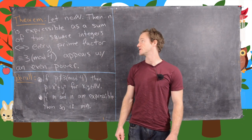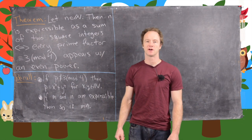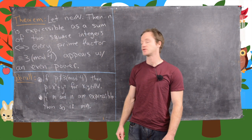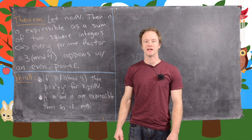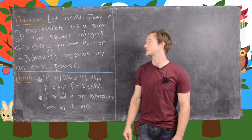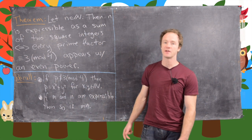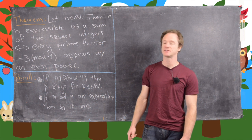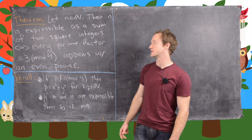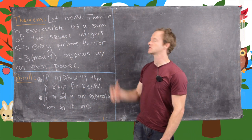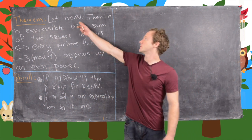This is the third in a series of videos where we talk about the expressibility of natural numbers in terms of sums of squares. And so this is the big theorem about expressibility in terms of the sum of two squares. So let's look at it.